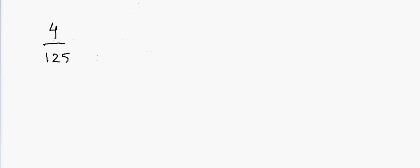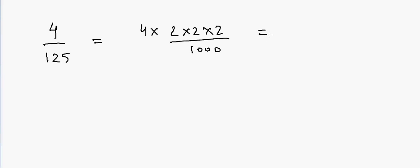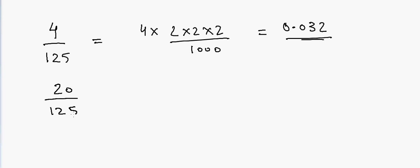Another example is dividing by 125. If I have 4 and want to divide by 125, that will be equal to 4 times 2 times 2 times 2 divided by 1000. So 4 times 8 is 32, giving us 0.032.